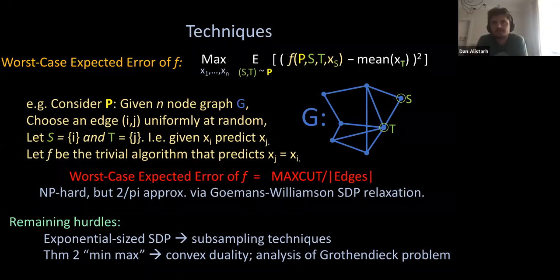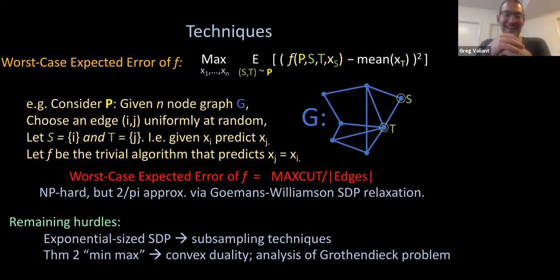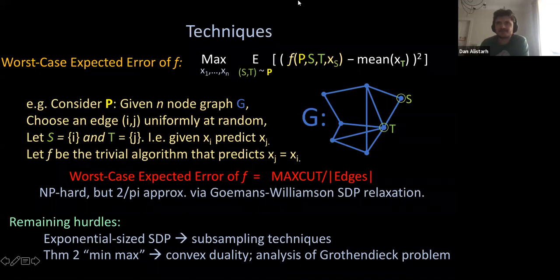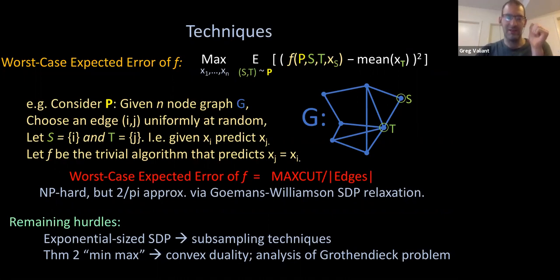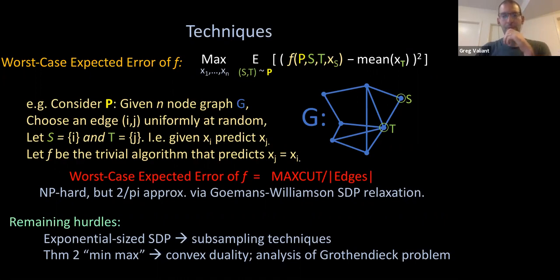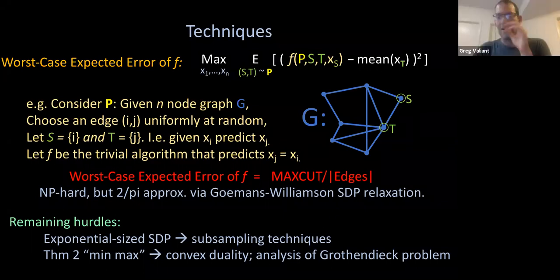The 2/pi factor is just the approximation ratio of the standard SDP relaxation — the Goemans-Williamson approximation ratio for this general SDP growth problem. Even for estimating the quality of a given estimator f, this 2/pi factor is tight in the sense that it's NP-hard to do better.